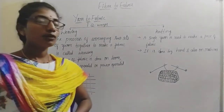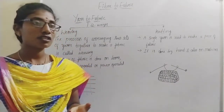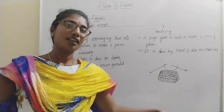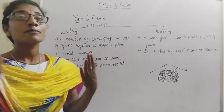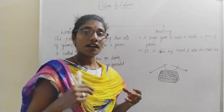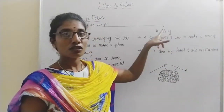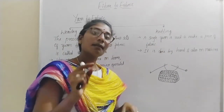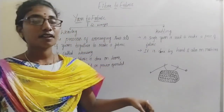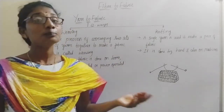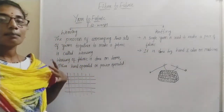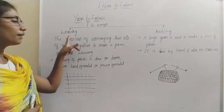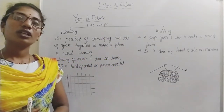Whenever you observe your socks — if a thread comes out and you pull that thread, you might have seen that the entire sock disappears into yarn. This is because the sock fabric is formed using knitting. Since the entire fabric is made with a single thread, if you pull a thread from the socks, the entire sock will be converted back into yarn. So this is about the conversion of yarn into fabric using two methods: waving and knitting.